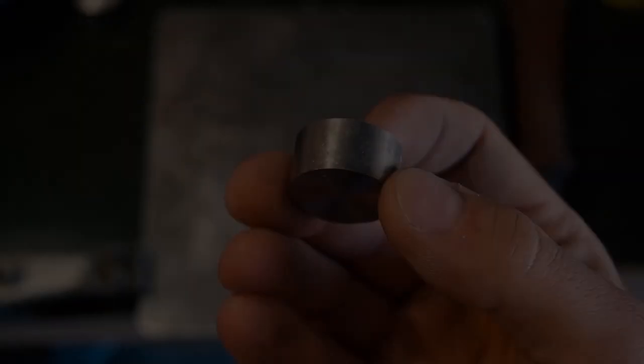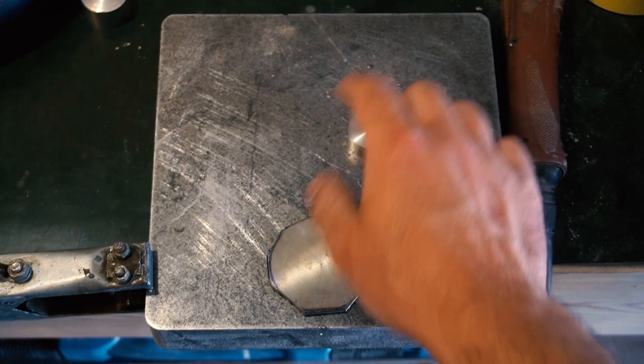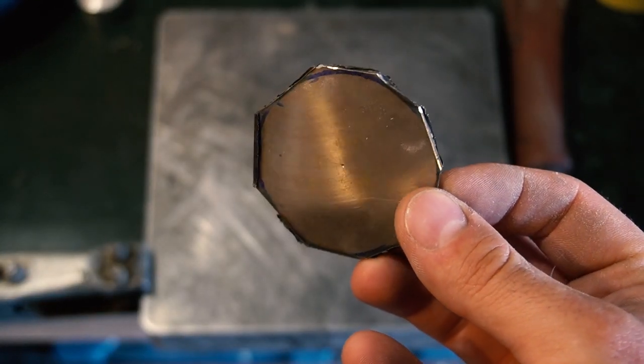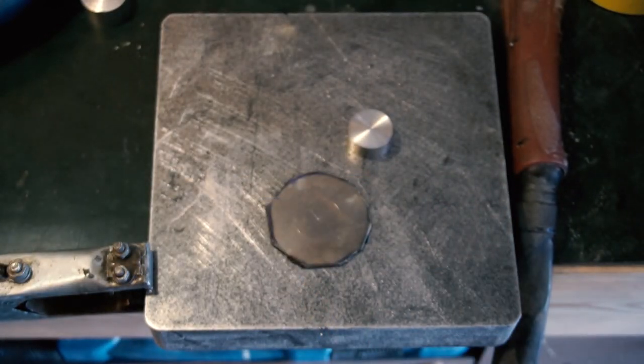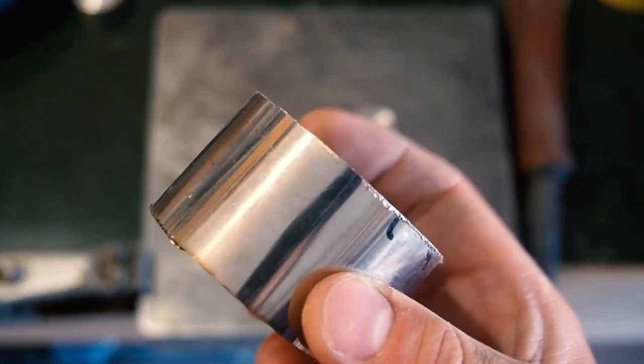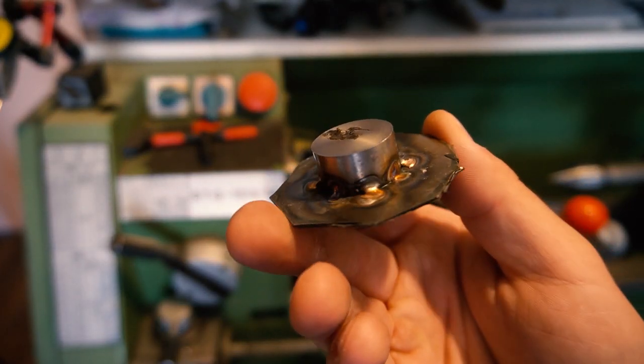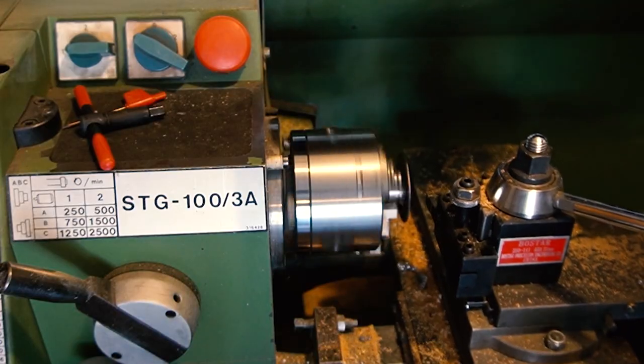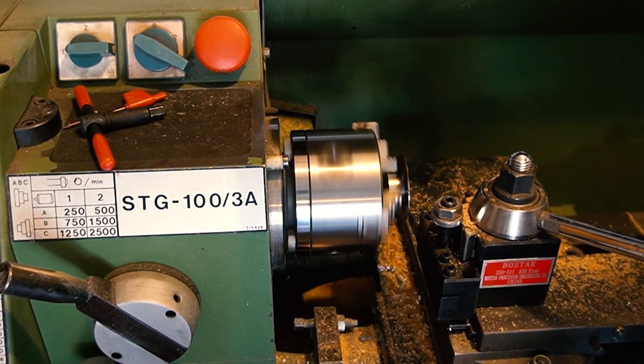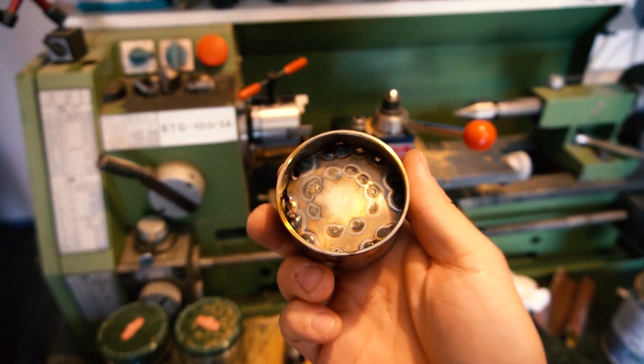We will begin with the manufacturing of the boat throttle control lever. I manufactured these 3 parts and I welded these 2 pieces together. Now using the lathe I can get it in the right dimension to finally weld it all together.